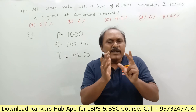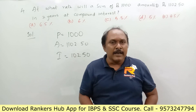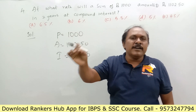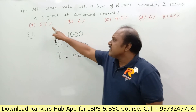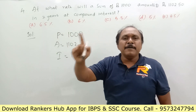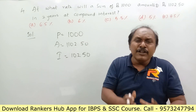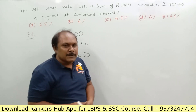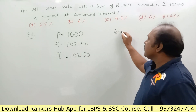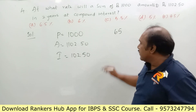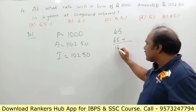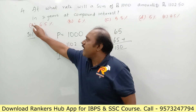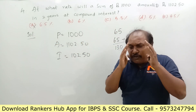If the first option is 6.5 percent: 6.5 percent of 1000 is 65 rupees for the first year. For the second year it would be 65 plus something, making the total more than 130 — which exceeds the required interest of 102.5. So 6.5 percent is wrong, meaning the rate should be less than 6.5 percent.